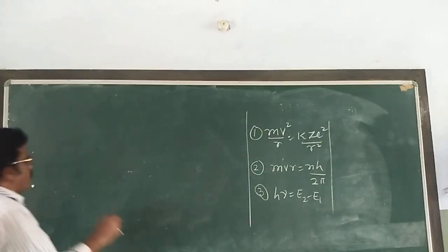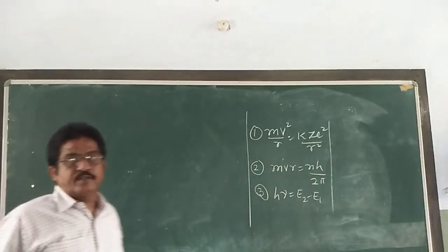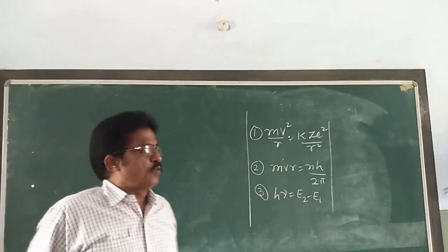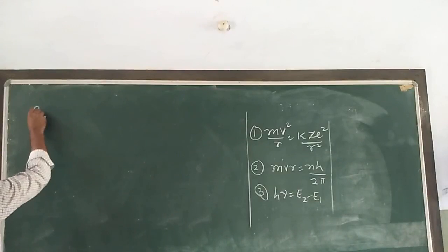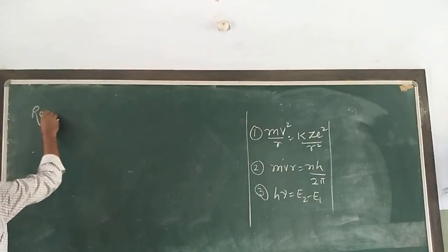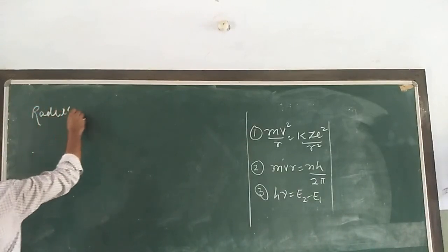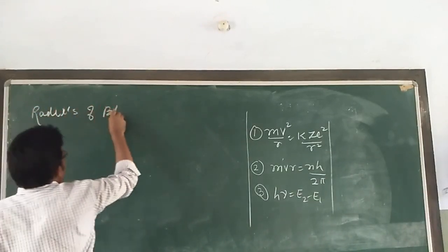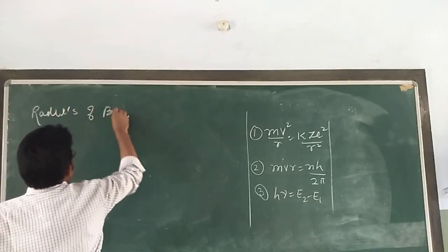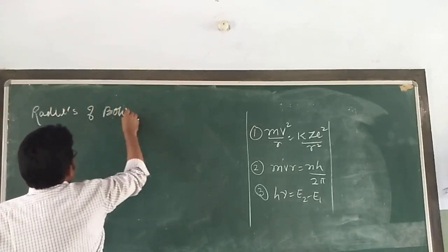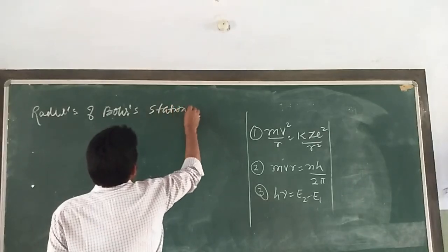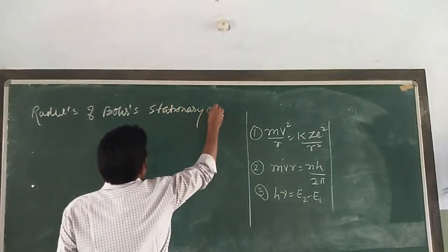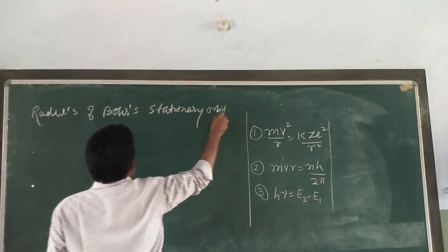Now today we are going to find out the radii of Bohr's stationary orbits. That is what we are going to learn today.